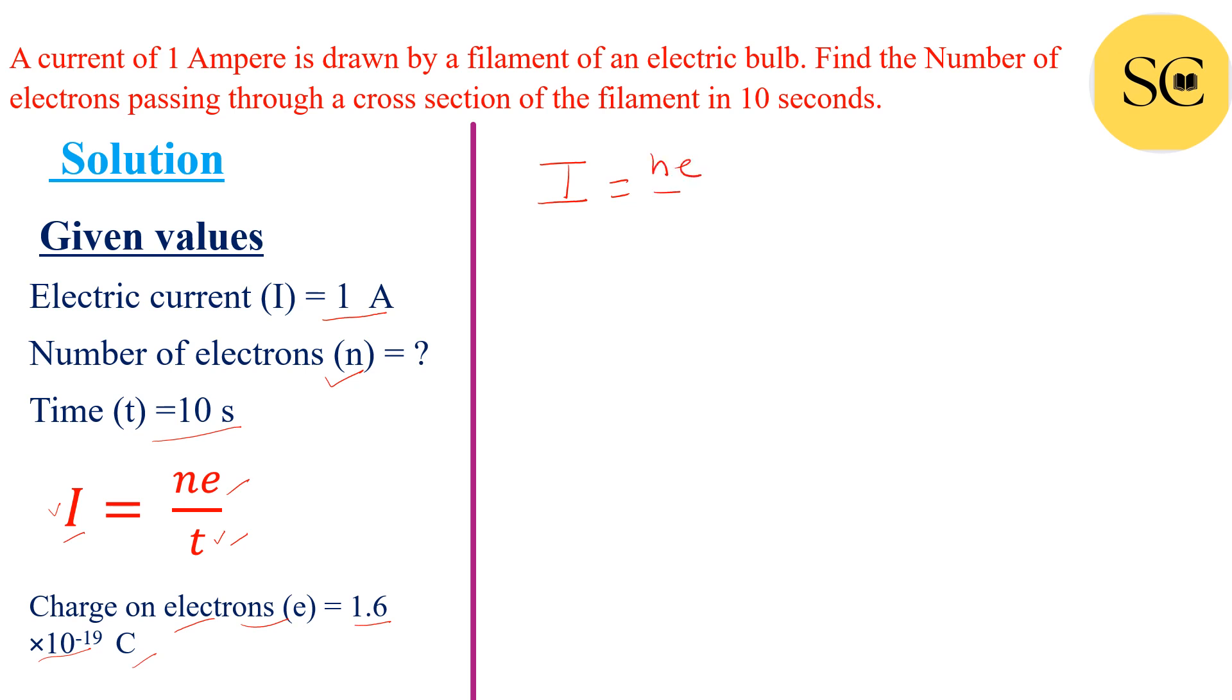We have this formula. After cross multiplication, we have the formula n = (I × t)/e. So we'll put the values.